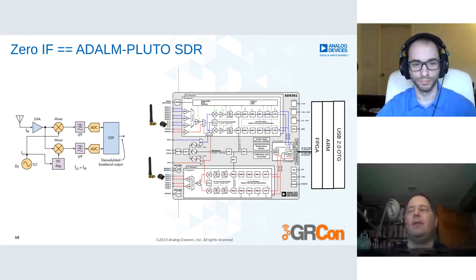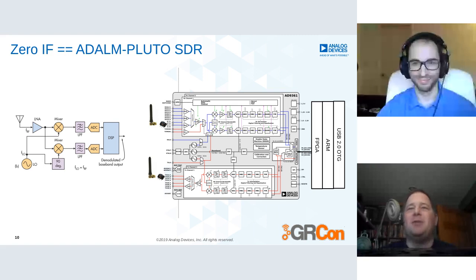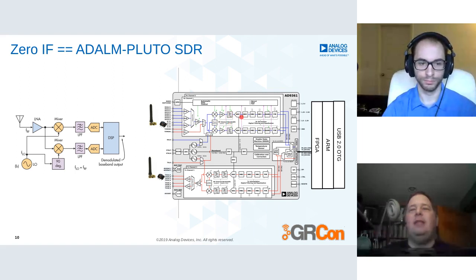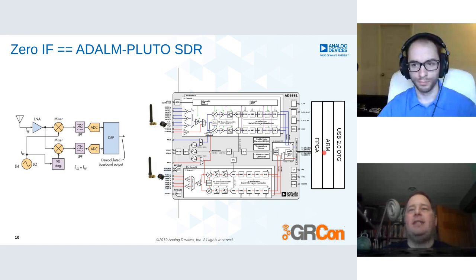If we look at the PlutoSDR, this is what the block diagram looks like. We have an LNA mixer stage, low-pass filter, and ADC — that's what's implemented in the chip. Here are the two mixers, the LNA, the ADC, some half-band filters for decimation, and a programmable FIR for low-pass filtering and equalization. Inside the Pluto it's connected to an FPGA, which is connected to an ARM, which is connected to USB 2.0 — all in a single-chip Zynq 7000 device.